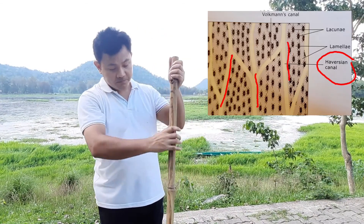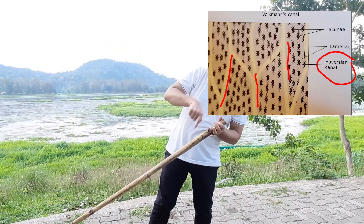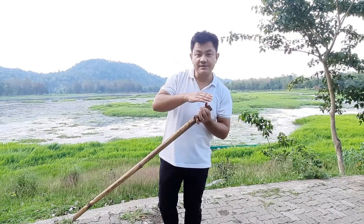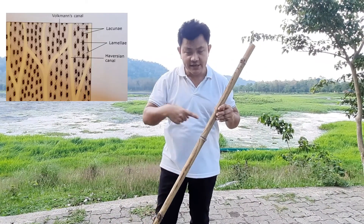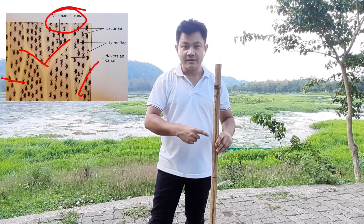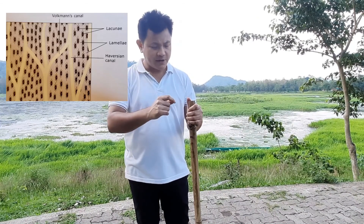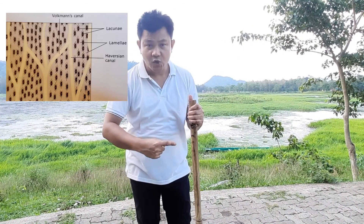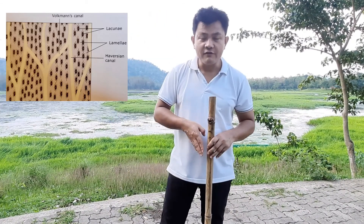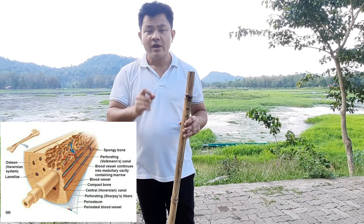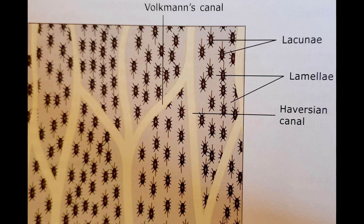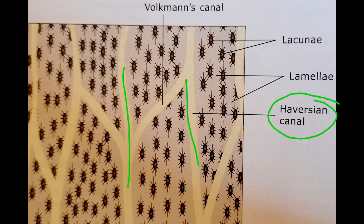The Haversian canal orientation is like this — going lengthwise along the long bone. The Volkmann's canal orientation is transverse, entering at 90 degrees. When blood comes to supply the bone, it first goes through the Volkmann's canal, then from layer to layer the orientation goes longitudinally — that is your Haversian canal. So Volkmann's canal is transversely oriented and the Haversian canal is longitudinally oriented.